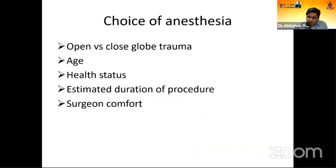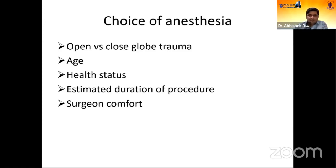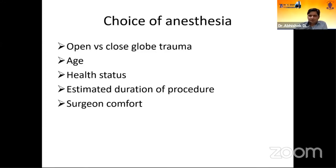Regarding choice of anesthesia, we generally prefer general anesthesia in trauma patients. In open globe cases, avoid peribulbar injection, but if there is no choice, use 5 mL peribulbar and supplemental sub-Tenon's injection, and avoid massaging the eye. Pediatric and younger patients require general anesthesia. Other factors include the patient's health status, estimated duration of procedure — if it will be a long or combined procedure, general anesthesia is preferred — and surgeon comfort.